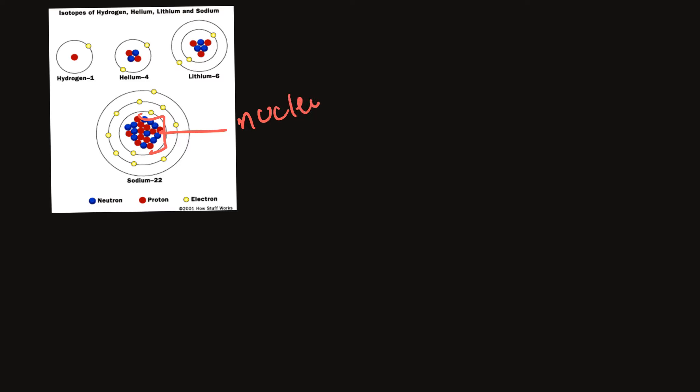When we talk about the structure of the atom, atoms are basically made up of three subatomic particles. Within the nucleus — here is an example of a nucleus — you have two subatomic particles. In red, we have our protons, and in blue, we have our neutrons.